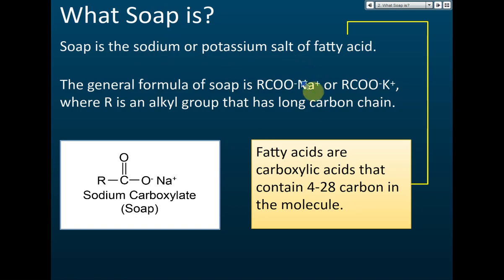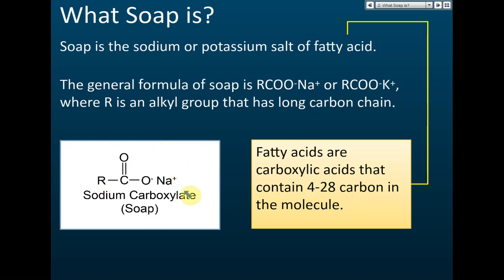So soap has positive ions of sodium and potassium. The COO group looks like the functional group of carboxylic acid — this is COO, the functional group of carboxylic acid. R is a long carbon chain; it can be 5 or 6 carbons, up to 22 or even 28 carbons. The number of carbons in fatty acids ranges from 4 to 28. This structure is called sodium carboxylate — that is the general name for the soap molecule.